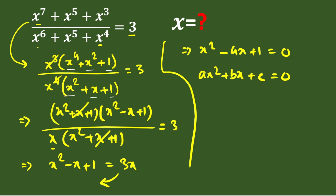Now we calculate the discriminant, D = b² − 4ac. Here b = −4, a = 1, c = 1. So D = (−4)² − 4·1·1 = 16 − 4 = 12. The value of the discriminant is 12.